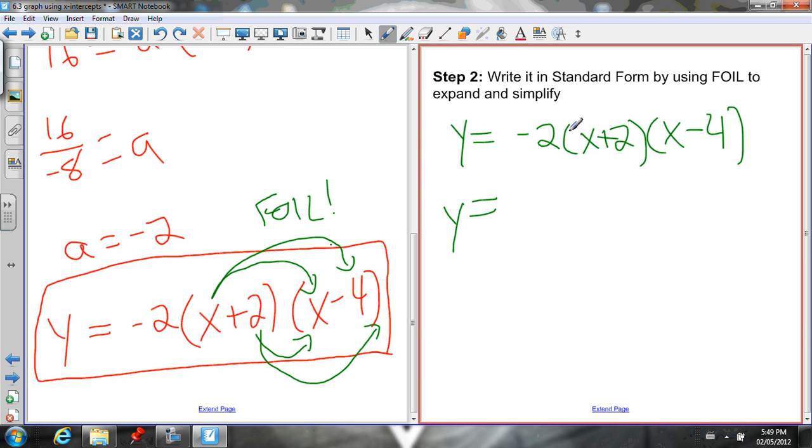You could multiply the negative 2 by the (x plus 2) first, and then multiply that product by (x minus 4). The order of multiplication doesn't matter. The way I like to do it is multiply the binomials first. Make sure you put the result in brackets so that you remember you have to distribute the negative 2 to each of those terms. So, multiply the first terms, x times x is x squared. The outside terms, x times negative 4 is negative 4x. Inside, 2 times x is positive 2x. Then, the last terms, 2 times negative 4 is negative 8.